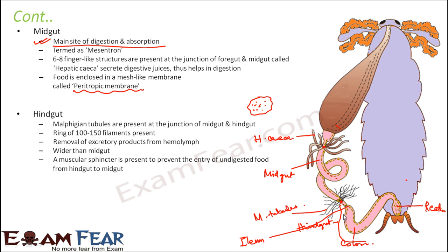The hindgut has three parts: ileum, colon, and rectum. The ileum is a short narrow tube, the colon is a highly coiled tube, and the rectum opens to the exterior through the anus. Undigested food passes through the ileum, colon, and rectum, and is finally excreted out through the anus.